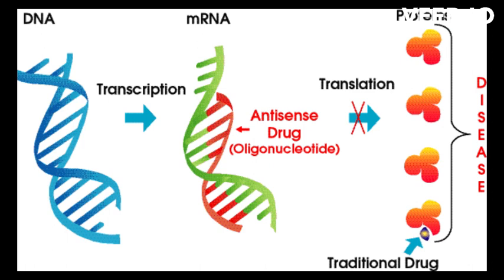This can be used to reduce the expression of a specific gene or to target specific RNA molecules that are involved in disease processes. For example, antisense technology has been used to develop drugs for the treatment of genetic disorders caused by mutations in specific genes.